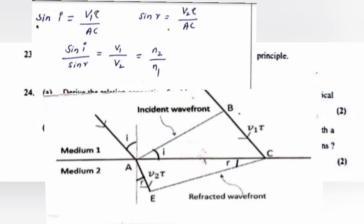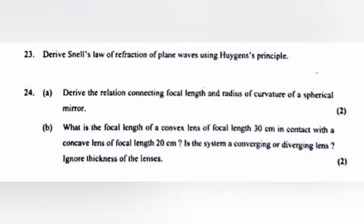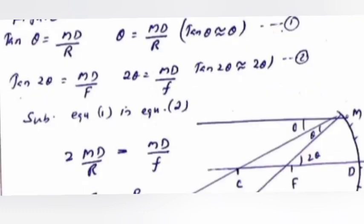Question 24a: Derive the relation connecting focal length and radius of curvature of a spherical mirror. Answer: tan θ = MD/R, so θ = MD/R (equation 1). tan 2θ = MD/f (equation 2). Substituting equation 1 into equation 2: 2MD/R = MD/f.